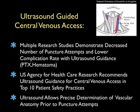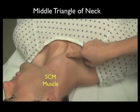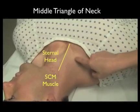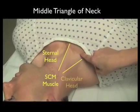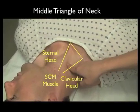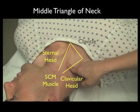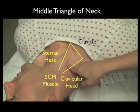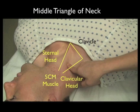Ultrasound will allow precise determination of the anatomy of the vascular structures in the neck prior to a puncture attempt. Here's the middle triangle of the neck that serves as the standard approach for cannulation of the internal jugular vein. We see here the branches of the sternomastoid muscle — the sternal head medially and the clavicular head laterally. The clavicle forms the inferior boundary of the middle triangle of the neck.